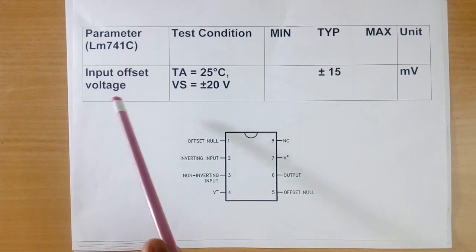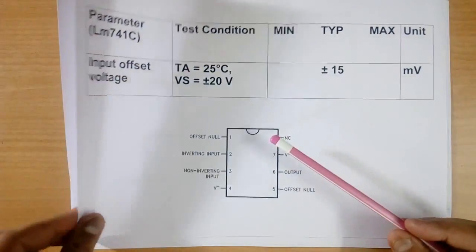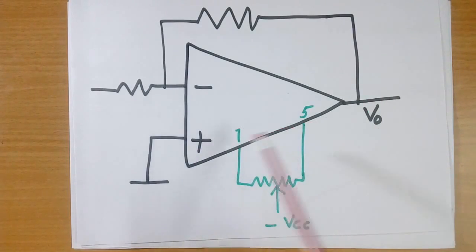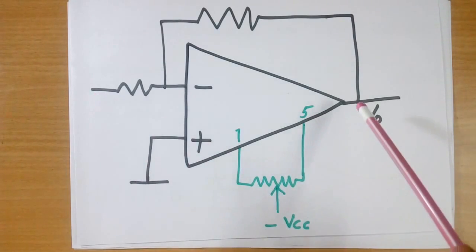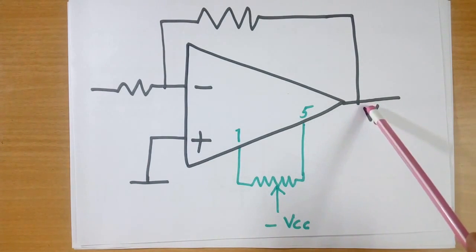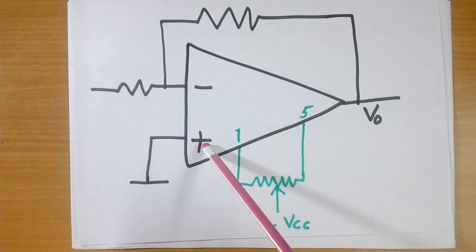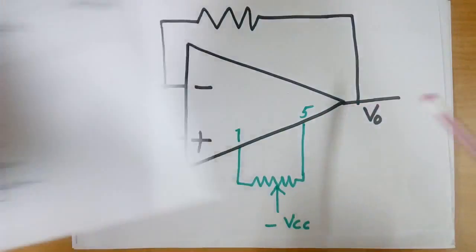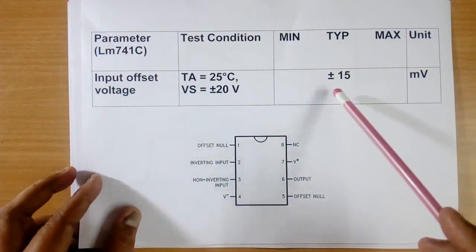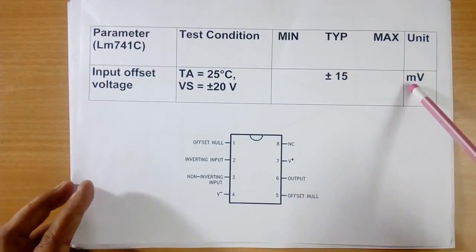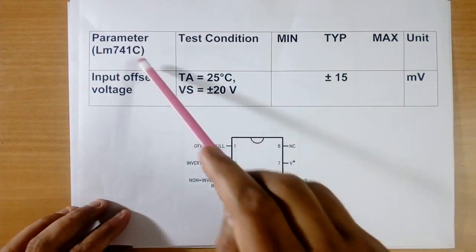Now input offset voltage. What is input offset voltage? We have a linear IC. Suppose we give 0 volt to plus terminal and minus terminal also, output should be 0. But it does not happen. Because positive and negative terminal are not identical exactly, so output will not be 0. It will have some value. That value is plus minus 15 mV in the case of 741C.